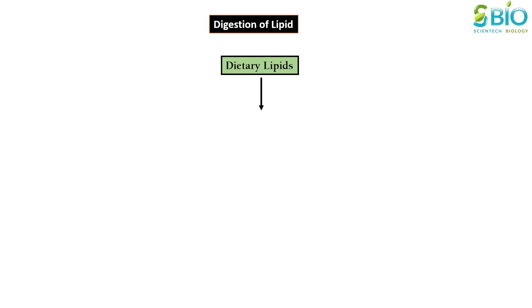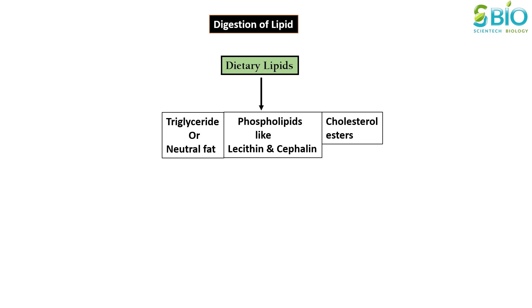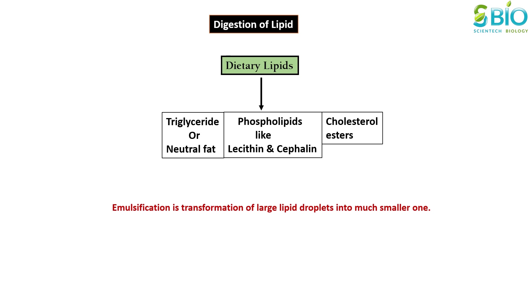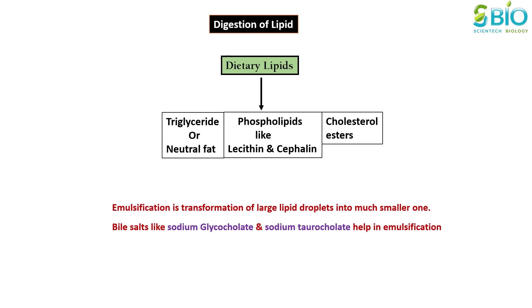The major dietary lipids include triglycerides, phospholipids, cholesterol, steroids, and fat-soluble vitamins. The first step in lipid digestion is emulsification, which is the transformation of large lipid droplets into much smaller droplets. Emulsification is accomplished by bile salts secreted by the liver and stored in the gallbladder.